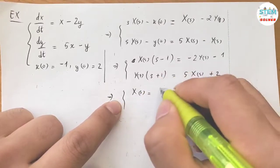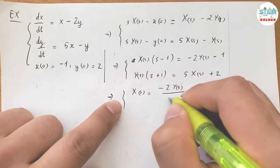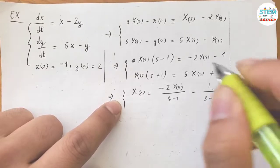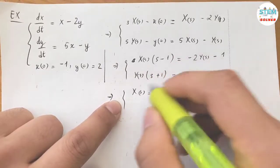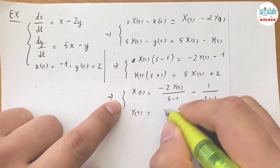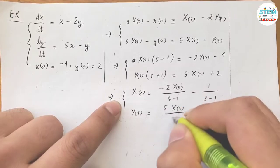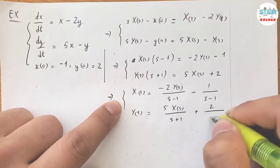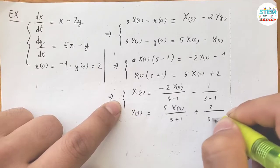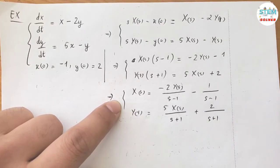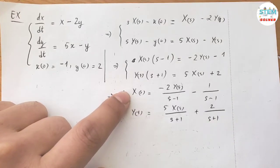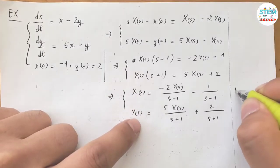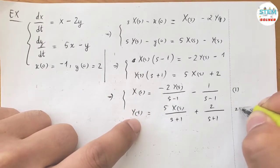Now solve for X and Y. I have X(s) equals negative 2·Y(s) over (s minus 1), minus 1 over (s minus 1). And Y(s) equals 5·X(s) over (s plus 1), plus 2 over (s plus 1). We now have both equations expressed in terms of X(s) and Y(s). I'll call these equation 1 and equation 2.